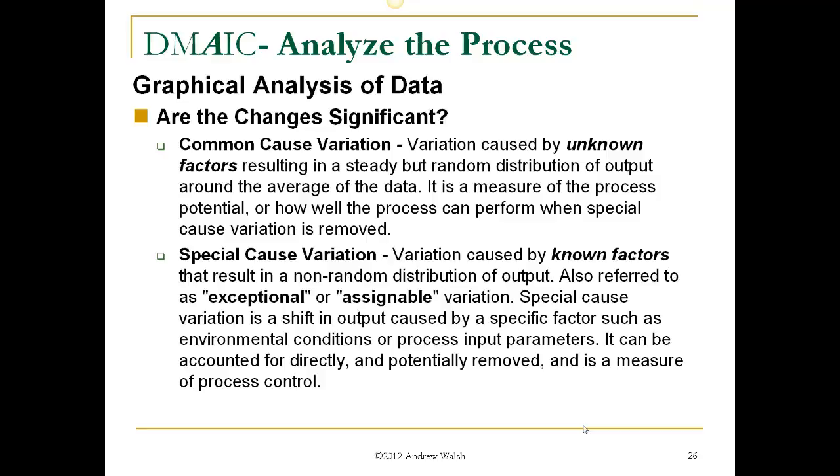Special cause variation. These are variations that are caused by known or soon to be known factors that result in non-random distribution of output. These are also referred to as exceptional causes or exceptional variation or assignable causes or assignable variation. Special cause variation is a shift in output caused by a specific factor such as an environmental condition or process parameter being different and it can be accounted for directly and potentially removed and eliminated and it is a measure of actual process control.